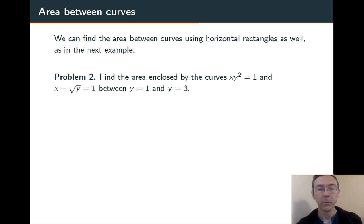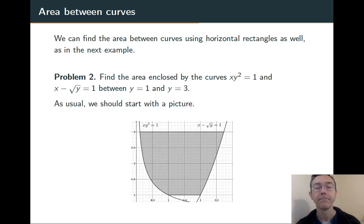Let's find the area enclosed by xy² equals one and x minus the square root of y equals one between y equals one and y equals three. Here's the picture. I really do recommend starting with a picture on all of these. It makes the integral much easier to set up if you have some geometric intuition.